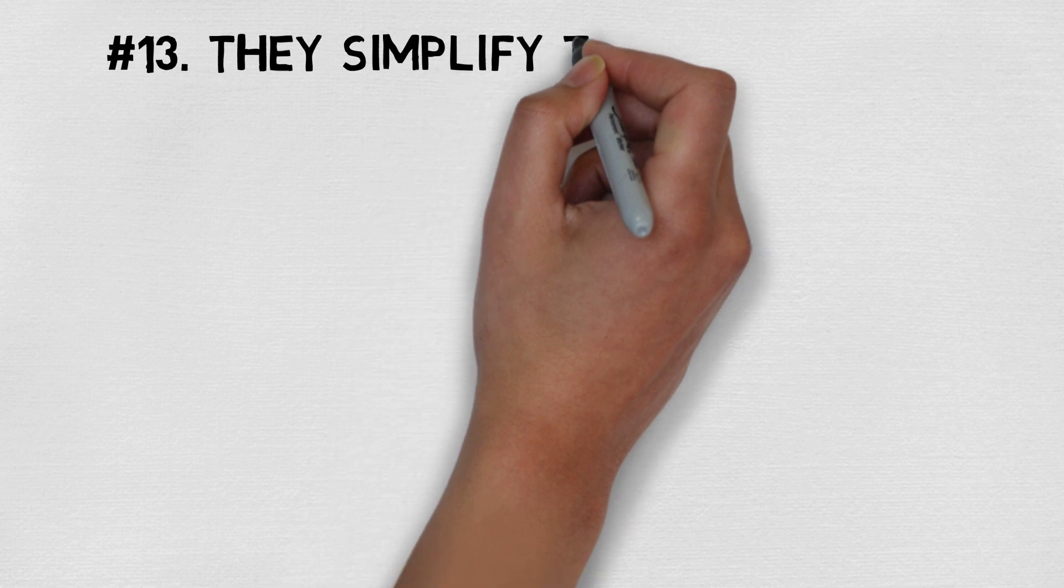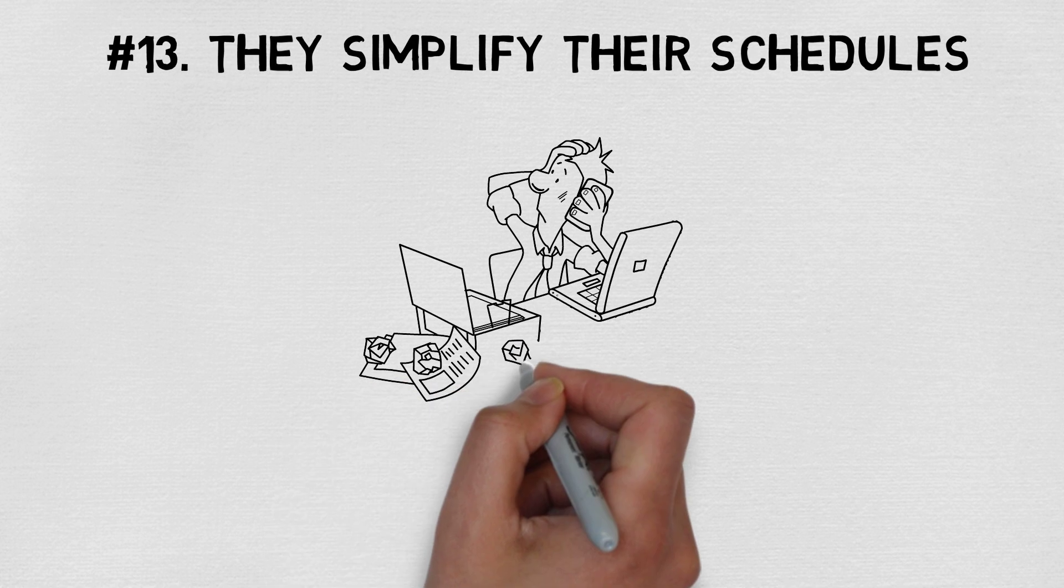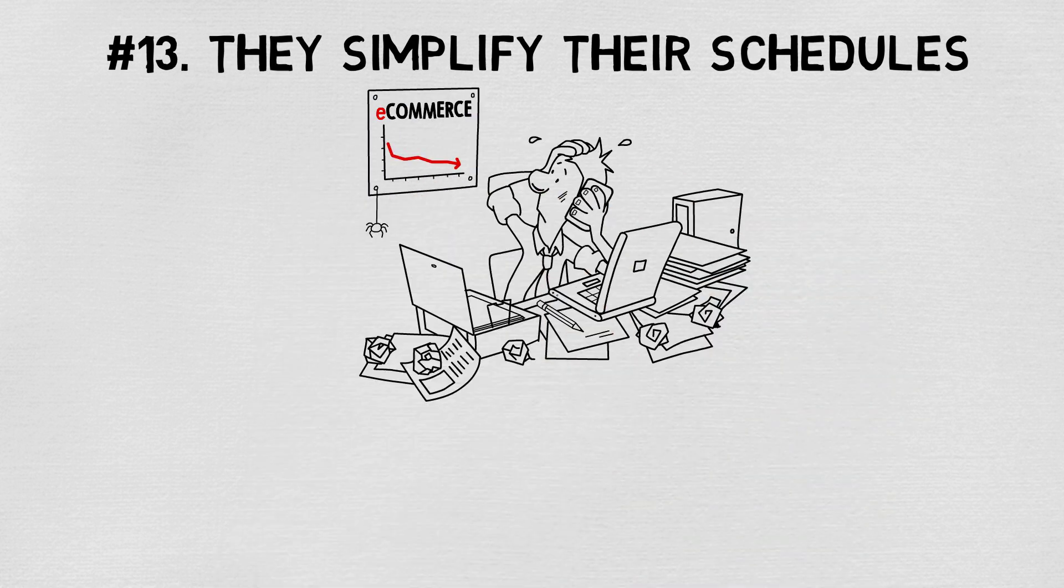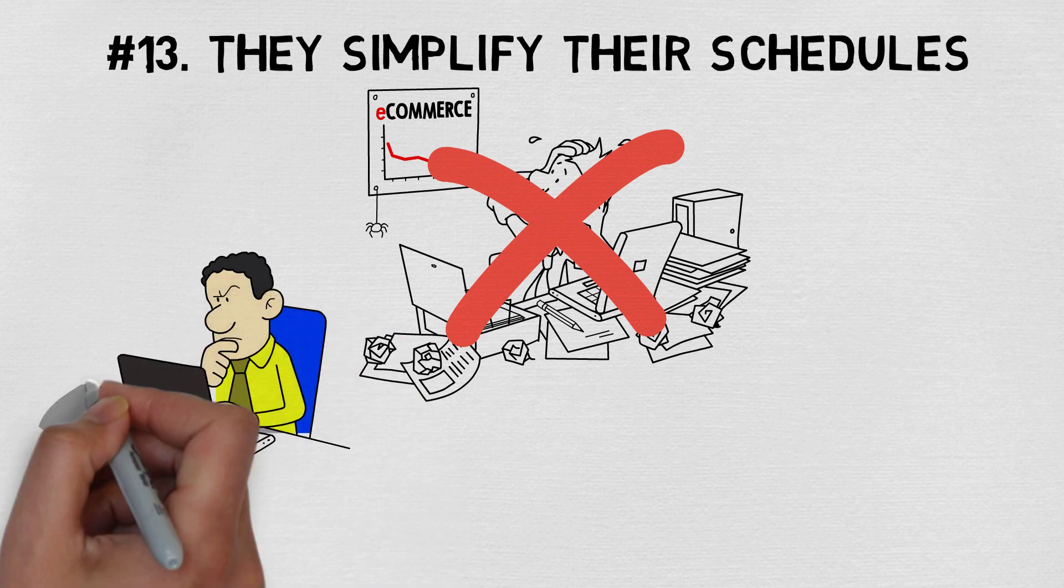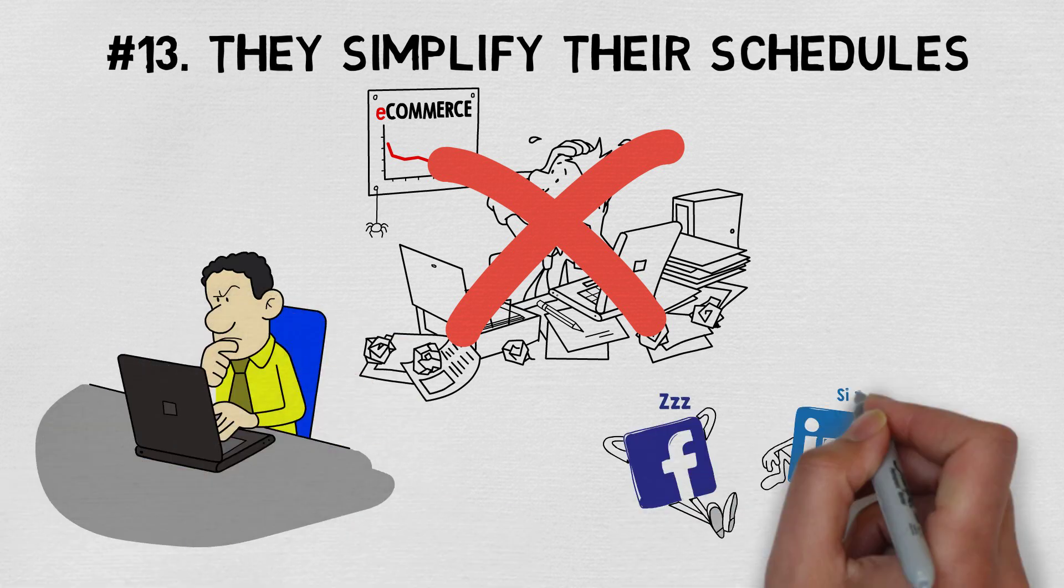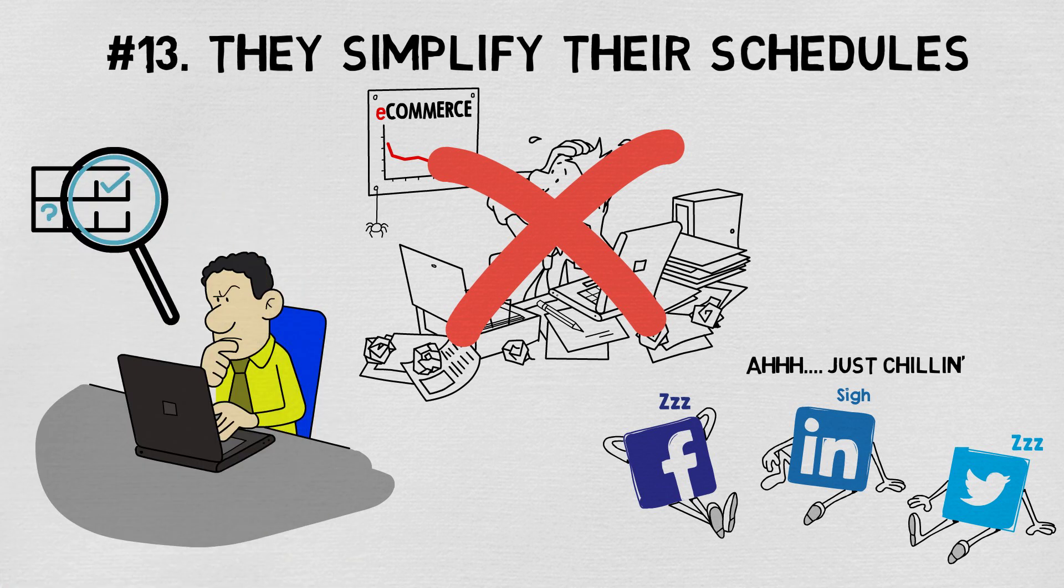Number thirteen, they simplify their schedules. Continuing on the efficiency train, another sign of an intelligent person would be a concise schedule. They make time for the necessities and eliminate anything that could be avoided. Intelligent people know how to delegate so their schedule won't look like an unsolved math equation.